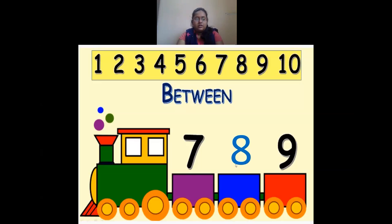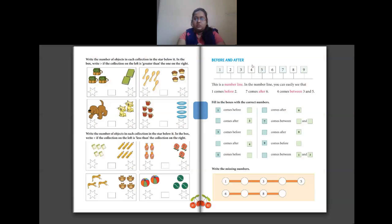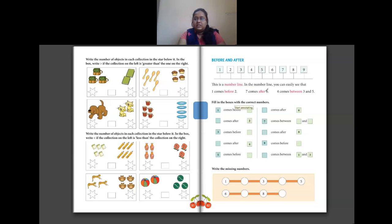So this is the concept of before, after, and between. Let's see some questions from your textbook on these concepts. Here they have shown a number line — a straight line which has numbers written on it. On this number line we have numbers from 1 to 9. They tell us: 1 comes before 2, 7 comes after 6 or before 8, and 4 comes in between 3 and 5.